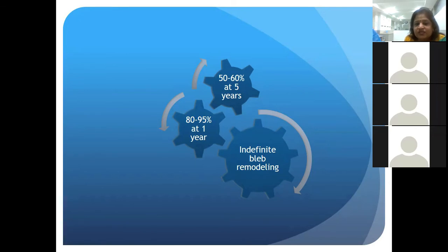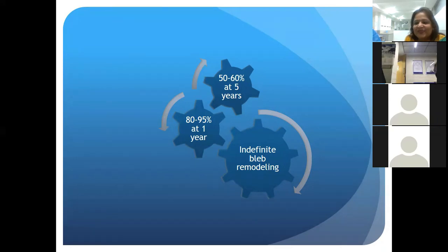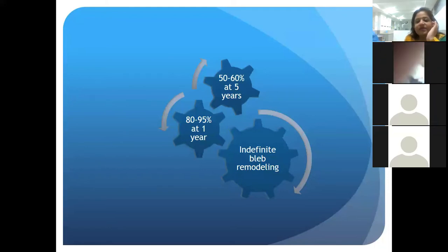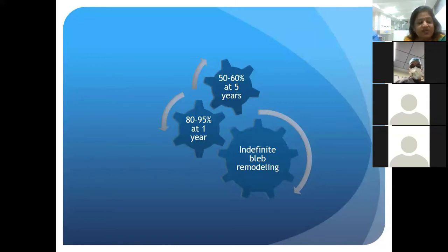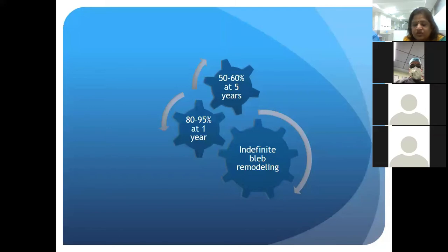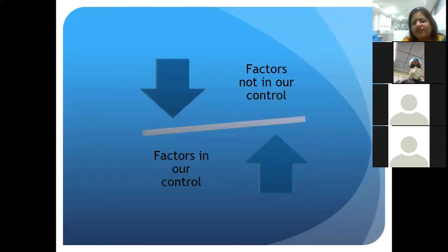Trabeculectomy has a success rate of 80 to 95 percent at the end of a year, and it drops dramatically to 50 to 60 percent at the end of five years. This goes to show there is so much tissue remodeling even assuming you have done a neat job during surgery. There are factors not in our control and factors which are in our control, and we can only play around with the latter.